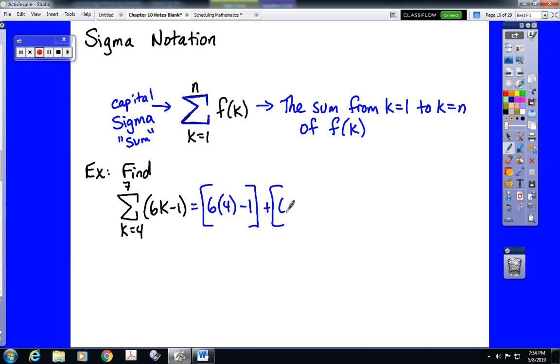Then we're supposed to plug in 5 for k, 6 times 5 minus 1. Then we're supposed to plug in 6 for k, so 6 times 6 minus 1. Then we're supposed to plug in 7 for k, and we stop at 7 because we were told to add up the numbers from 4 to 7, which would be 4, 5, 6, and 7. From there, we would add those values up, so we need to simplify them. 24 minus 1 is 23, plus 30 minus 1 is 29, plus 36 minus 1 is 35, plus 42 minus 1 is 41.